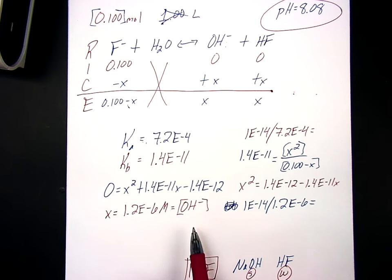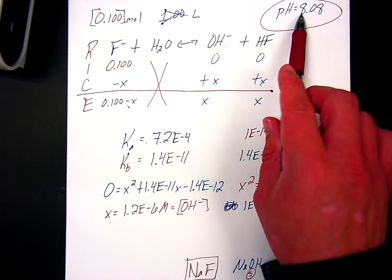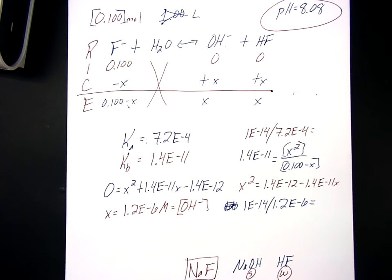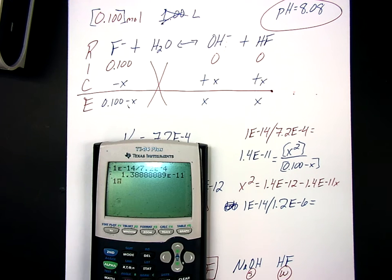All right, we got interrupted on that last video, but what I had just said was that we have an OH minus concentration, but I want an H plus concentration because we're trying to check a pH in order to see if this salt that we've created is correct.